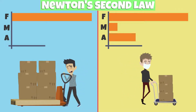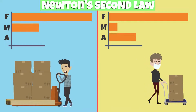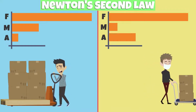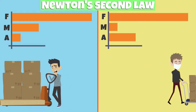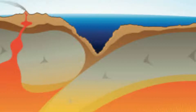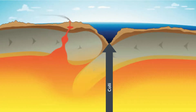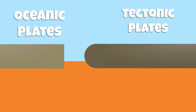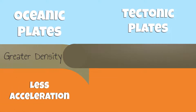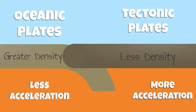The same is true for the object with more mass — its acceleration will be less because it requires a greater force to accelerate. When oceanic and continental plates collide with each other, an earthquake occurs. Although the force acting on each other are the same, oceanic plates have greater density, so their acceleration is less in comparison to continental plates. Since continental plates are less dense, their acceleration is greater.